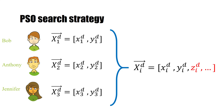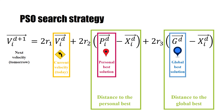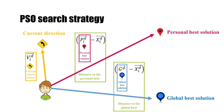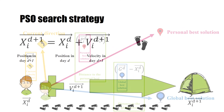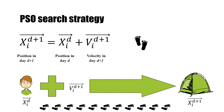To update the position vector, we need to define the movement direction and speed, done using a vector called velocity. The V vector on the left-hand side shows the velocity for the next day. This vector is defined by three components: current velocity, tendency towards the personal best, and tendency towards the team's best — which we call g-best. For the second and third components, we calculate the distance to the personal best and the distance to the global best, each multiplied by 2 times r to randomly increase or decrease its impact. The next day's position equals today's position plus the velocity for the next day.